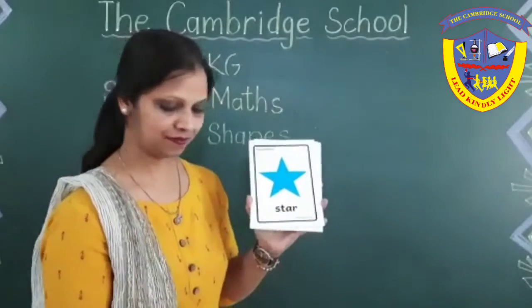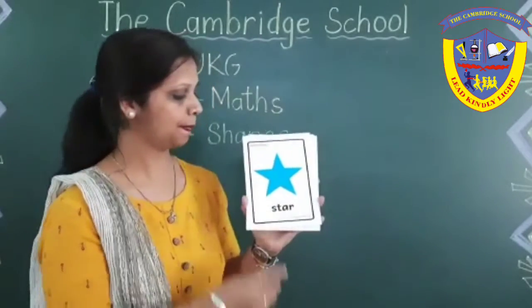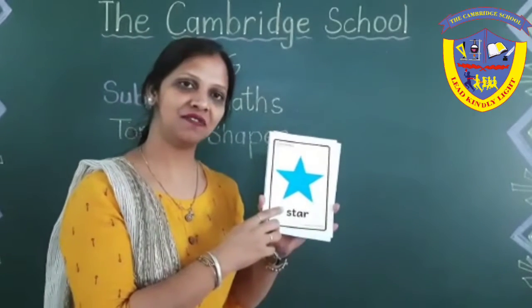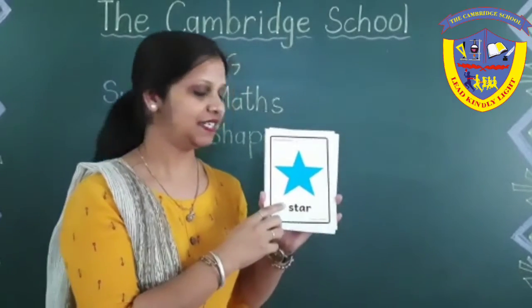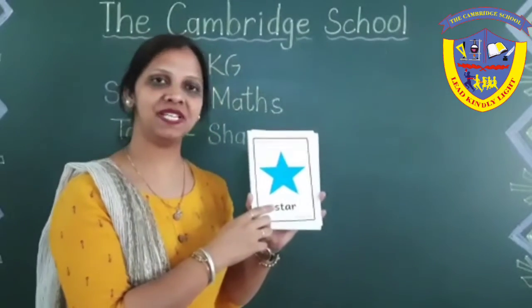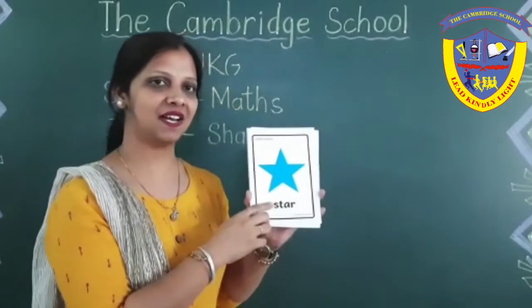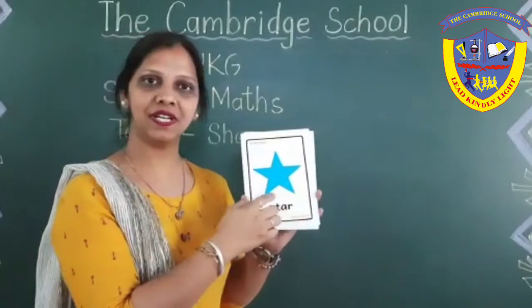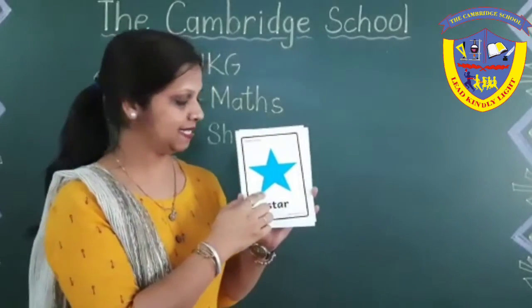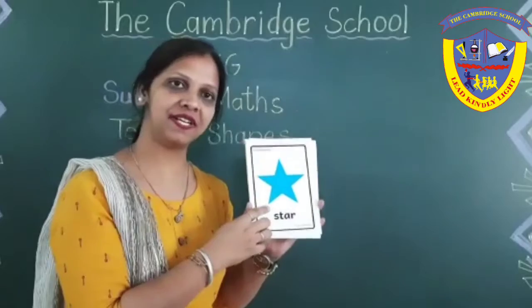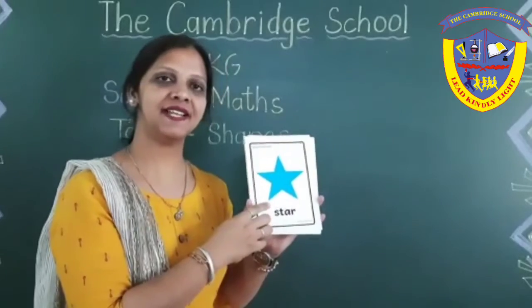Next, tell me, which shape is this? Yes — star. This shape is star. It has five corners and ten sides.